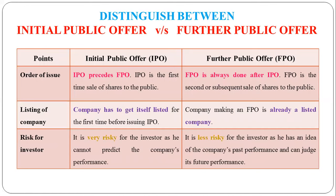Subsequent means the second, third, fourth, fifth time when the company sells its shares — that is FPO. At the time of IPO, the company is not yet listed. At the time of FPO, the company is already listed on the stock exchange, because it was listed during its IPO.